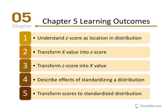An X-value is just a placeholder for the variable that we're interested in studying — for example, SAT score, height, or weight. We'll be able to transform any X-value in a distribution into a Z-score, which is considered a standard score. We'll also learn how to transform Z-scores back into X-values, describe effects of standardizing a distribution, and learn how to transform scores into a standardized distribution, which has a predetermined mean and standard deviation.